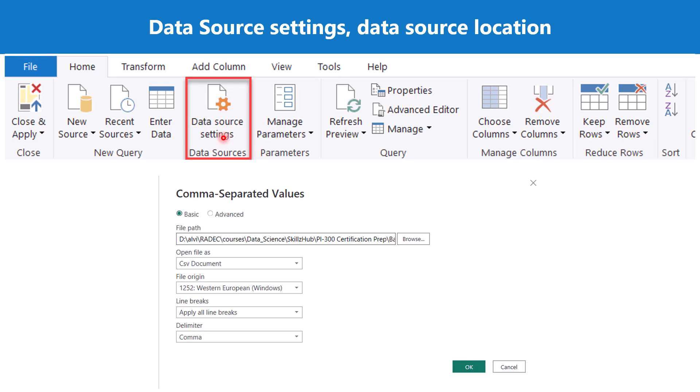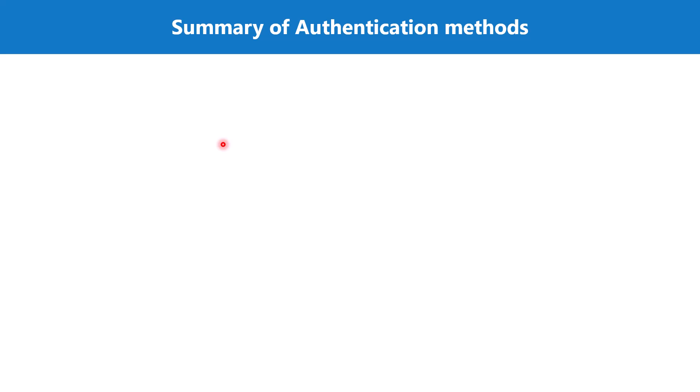In the previous video we talked about data source settings, and some of those settings include the privacy level settings and also the credentials associated with the data source. For every data source there are multiple options for passing credentials — in other words, different authentication methods. The first one is anonymous, which means you do not require any credentials to connect to that particular data source.